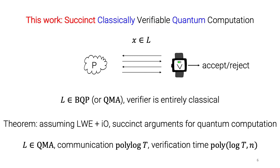In this work, we managed to construct verifiable computation with both of the efficiency guarantees that we just described. It is both the case that the verifier is classical, even though it is verifying a quantum computation, and moreover, the communication in the protocol is short and the verification is extremely fast. Our formal result is that assuming the hardness of LWE, and additionally assuming the existence of indistinguishability obfuscation, we construct succinct arguments for all BQP or even QMA languages, where the communication is polylog t, where t is the QMA verification time, and the verification time of the protocol is polylog t and a fixed polynomial in the instance length.